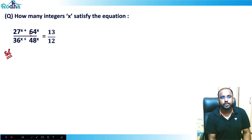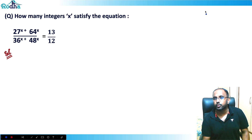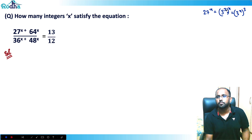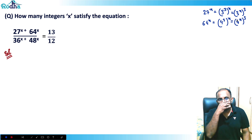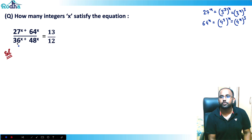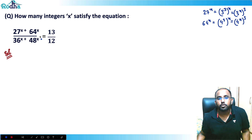I need to observe a few things here. 27^x = (3³)^x = (3^x)³, and similarly 64^x = (4³)^x = (4^x)³. I can also observe that 36 and 48 are both products of powers of 3 and 4.